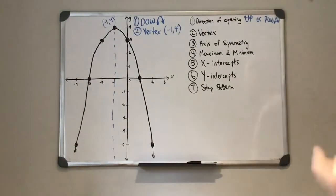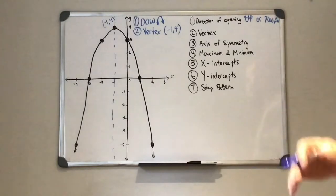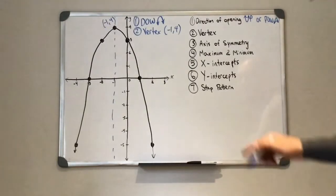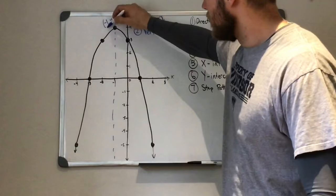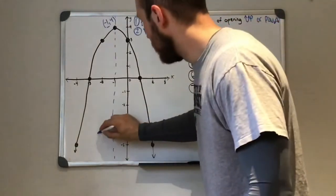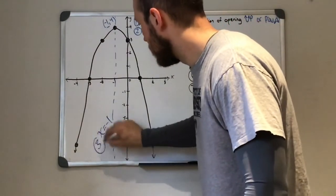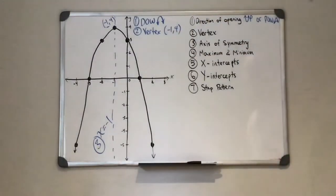So every vertical line has an equation that starts with x equals a number. So in this case x equals negative one. There's our axis of symmetry.